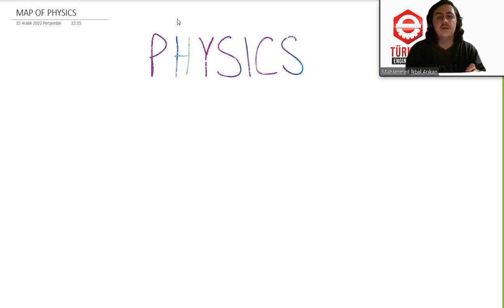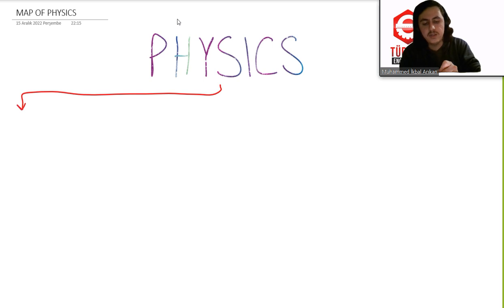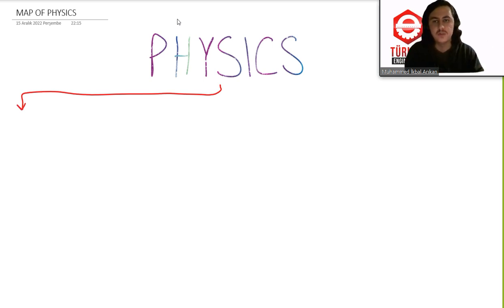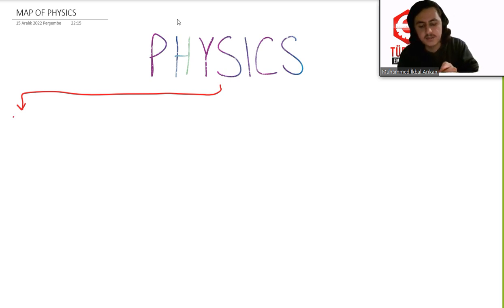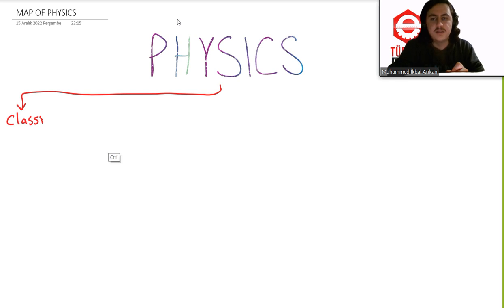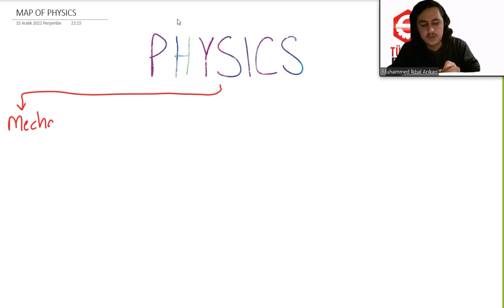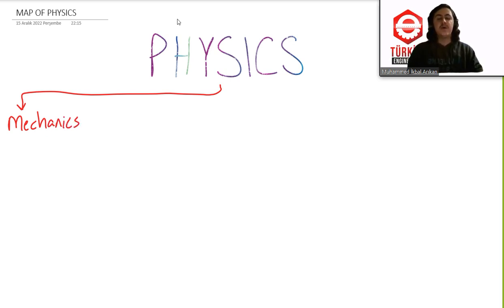Let's start the introduction video by drawing a map for physics. The first part of physics we study in high school or college — the classical approach — will be classical mechanics. We can just put mechanics, but it's actually classical mechanics, the classical approach. We will start with mechanics and it will actually be the biggest part of physics.